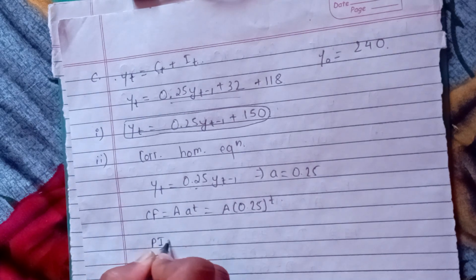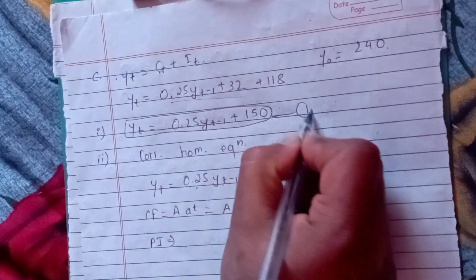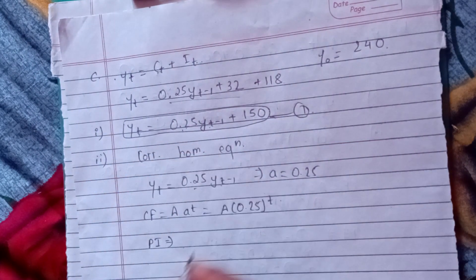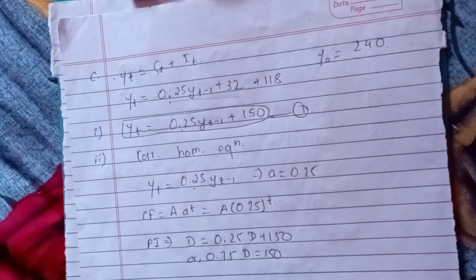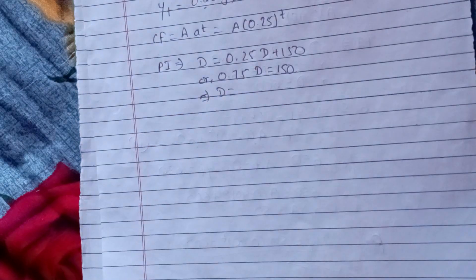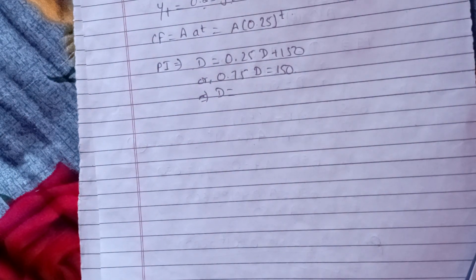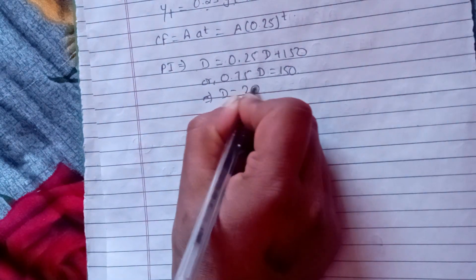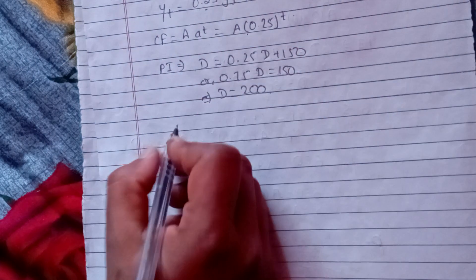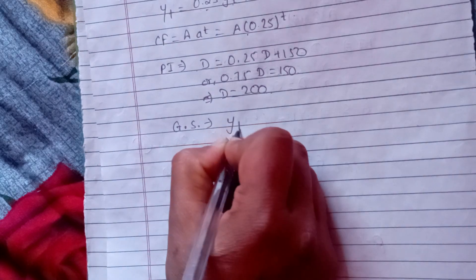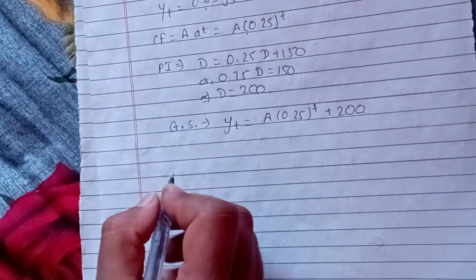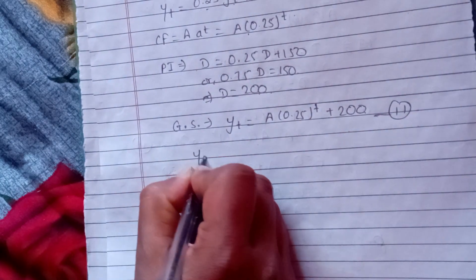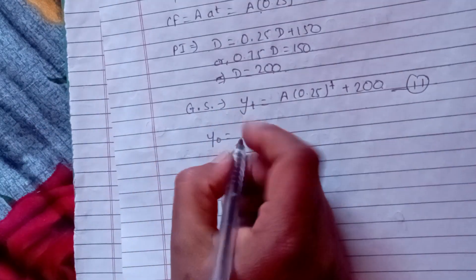Let's solve the particular integral. We have yt-1 with d plus 150. So 0.75*d = 150. Now the d value gives us d = 200. We have a general solution: yt = CF plus PI, which is a times 0.25^t plus PI equal to 200.